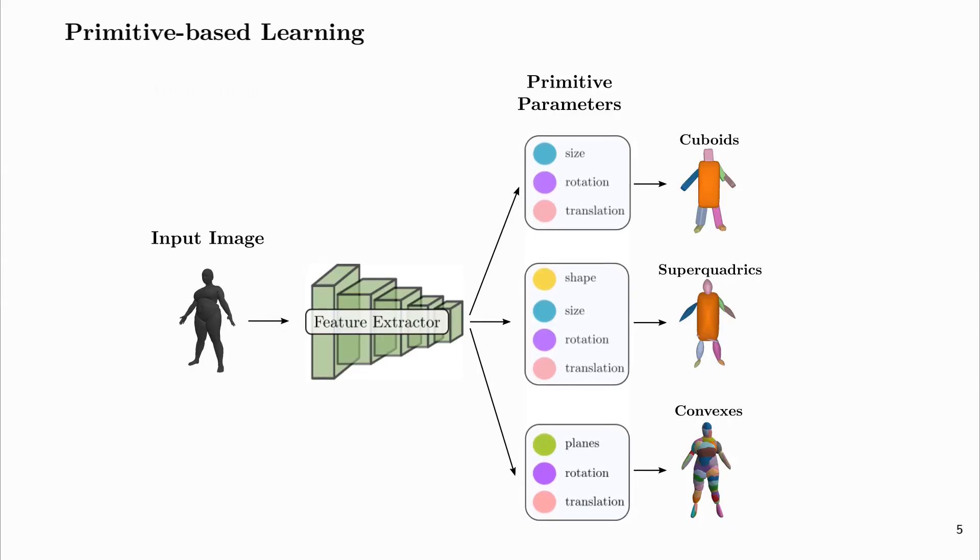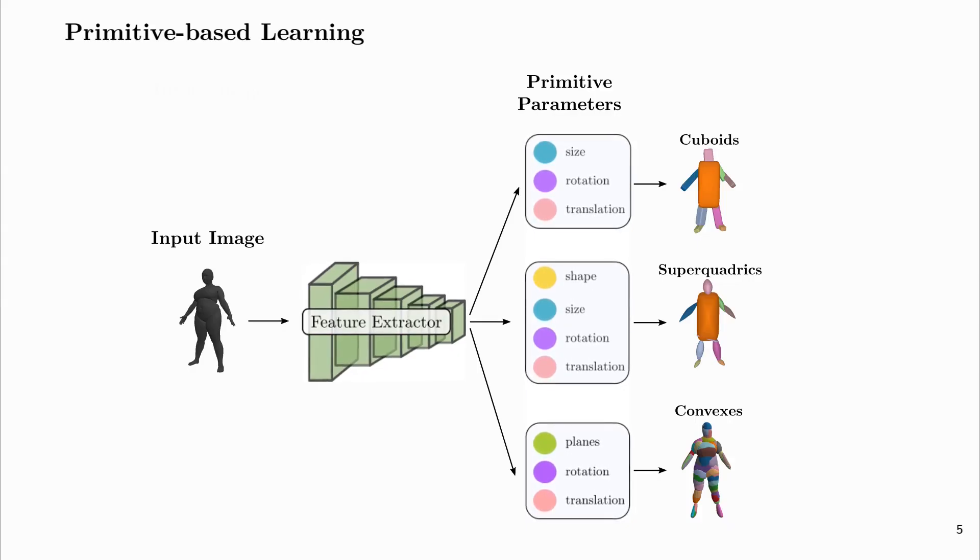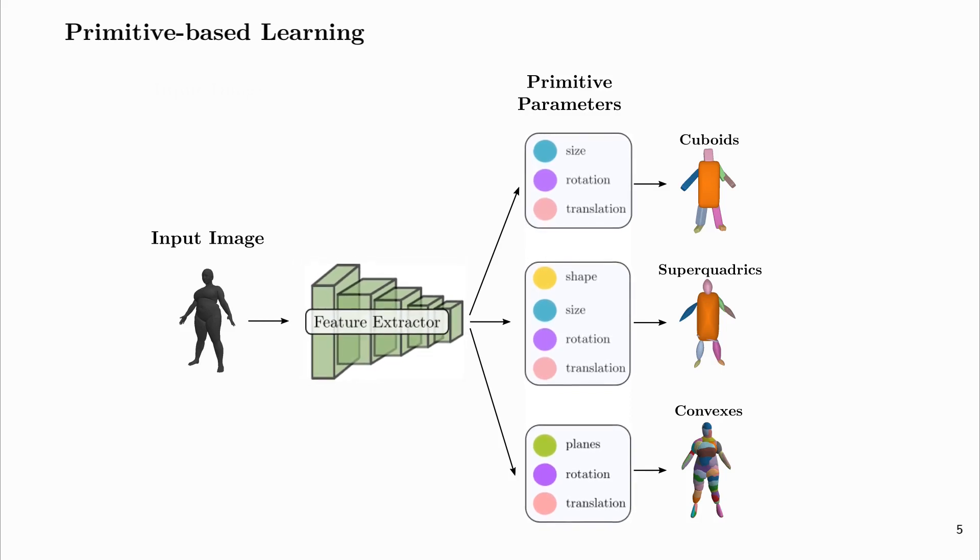Existing primitive-based methods utilize a feature extractor architecture that directly predicts the primitive parameters conditioned on the input. This constrains the predicted parts to a specific family of shapes, such as cuboids, superquadrics, or convexes.